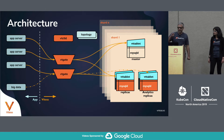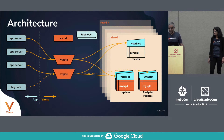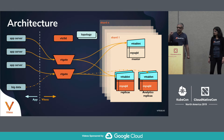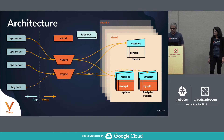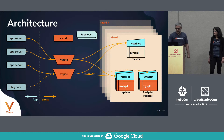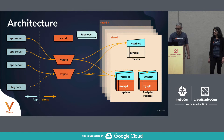The topology server stores two different things: one is the topology in terms of host and port numbers of the various processes, and the second is a description of how each table in a sharded keyspace is sharded. VTCtld is the control plane. Keep this architecture diagram in mind as I talk about the various concepts.